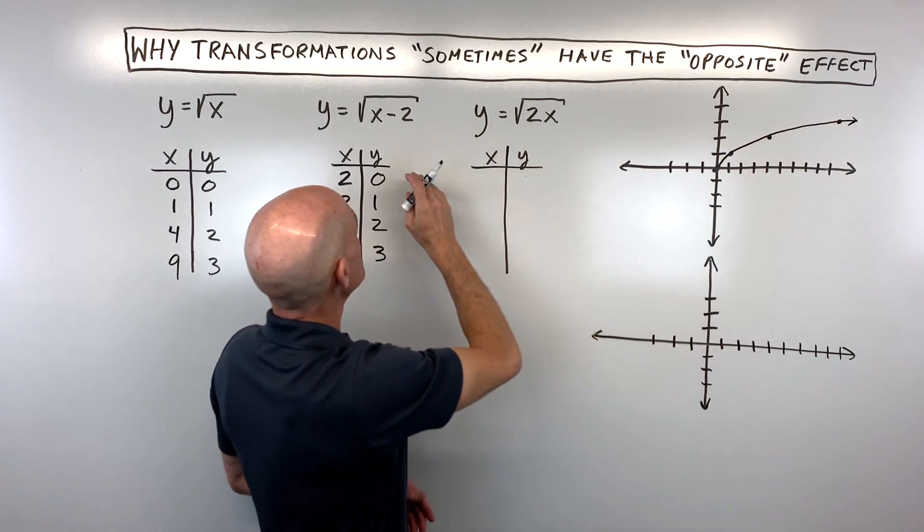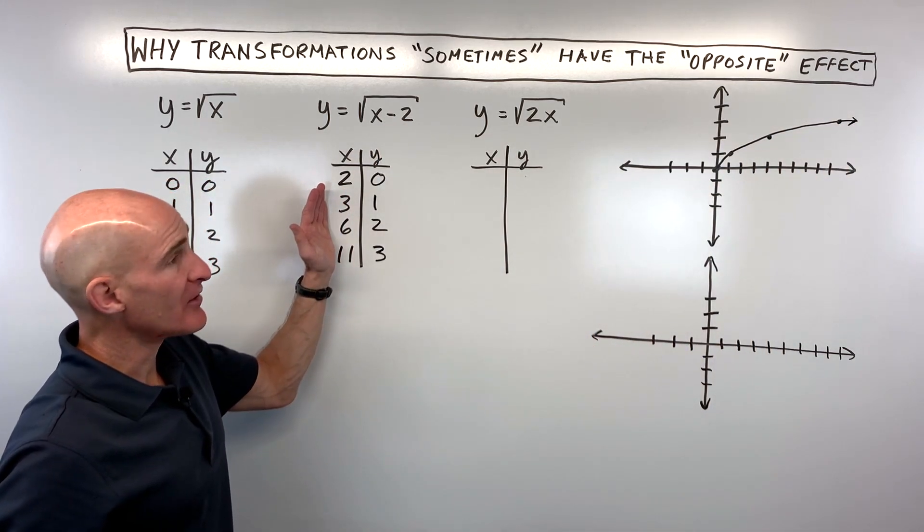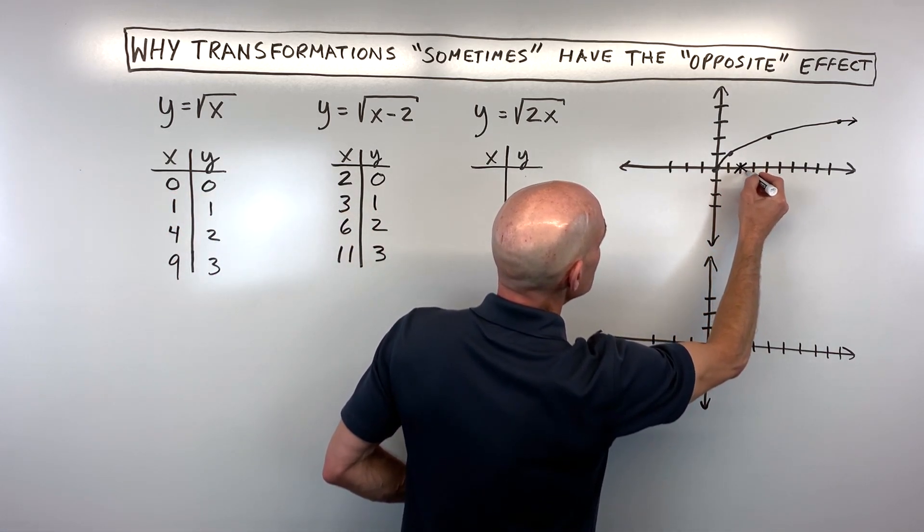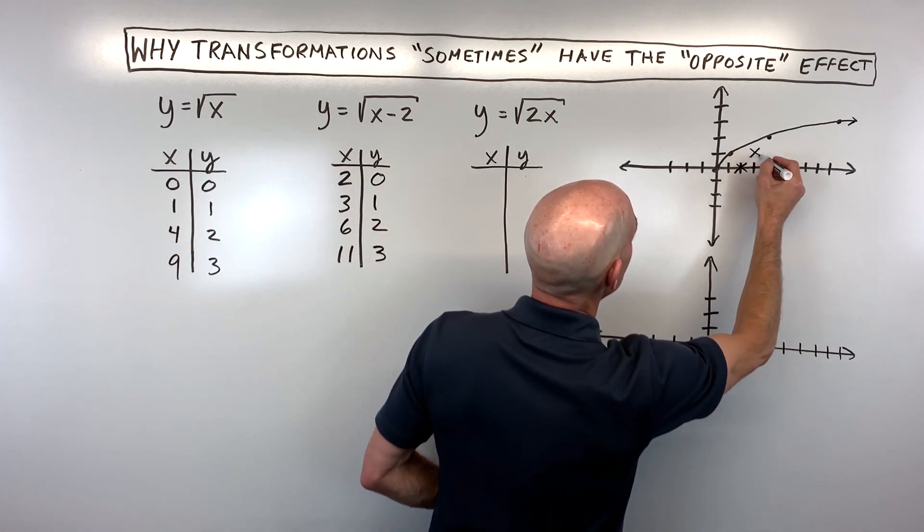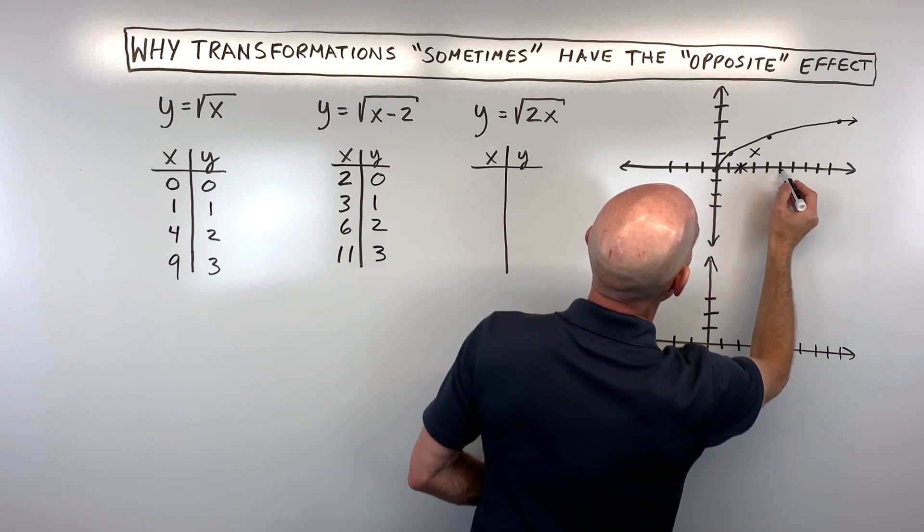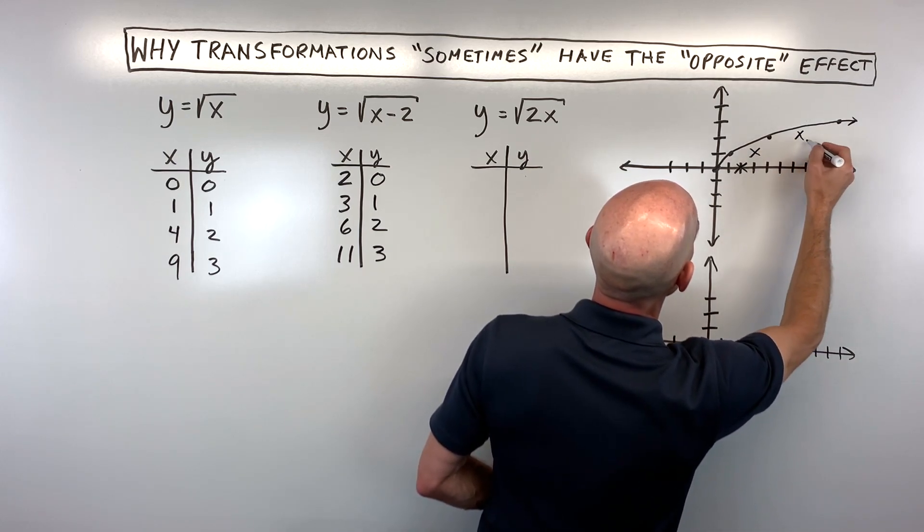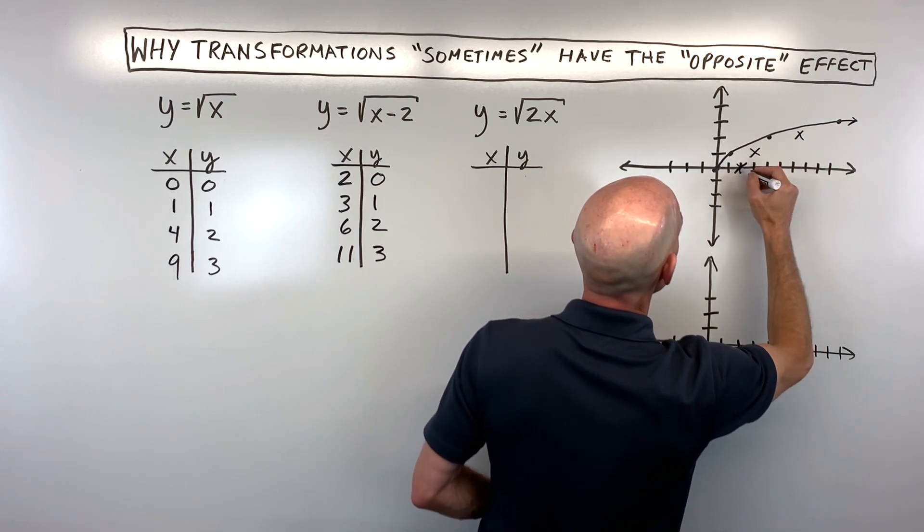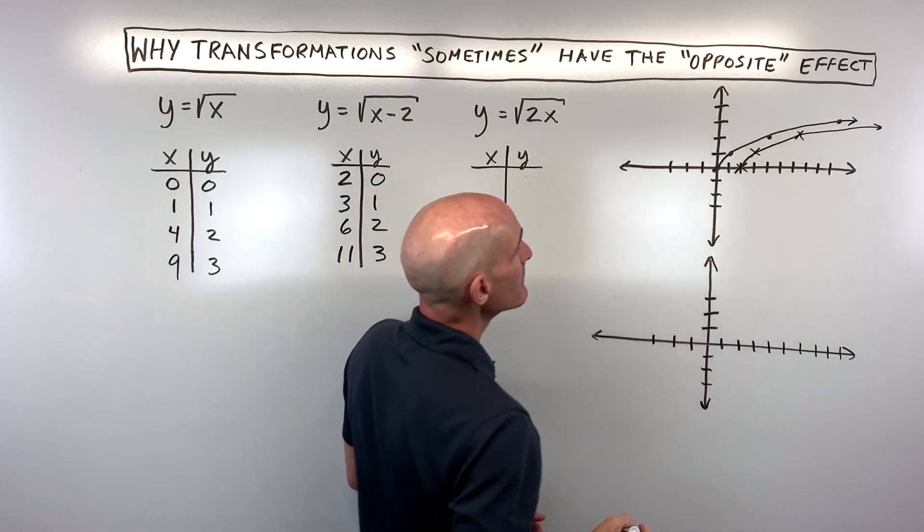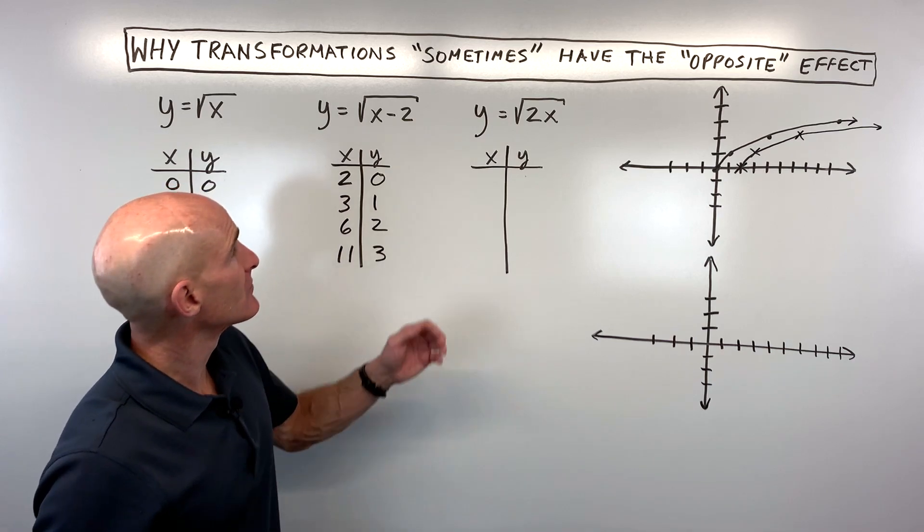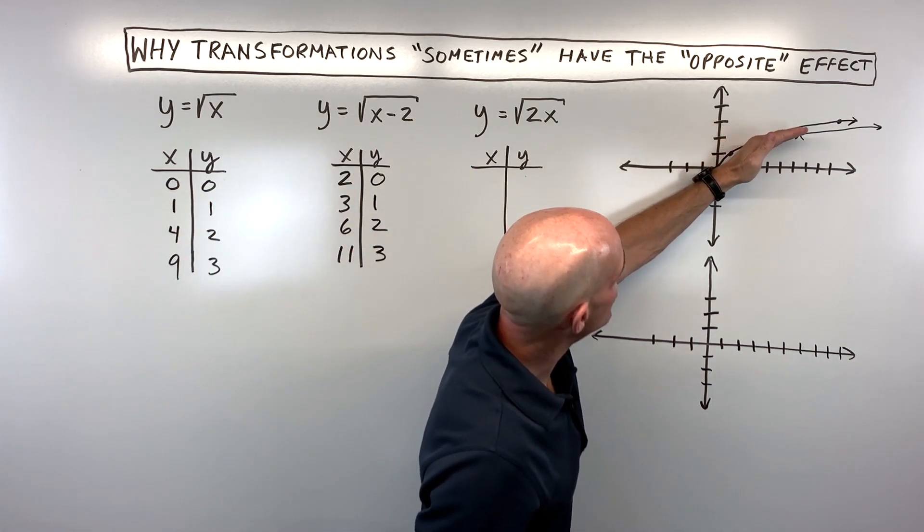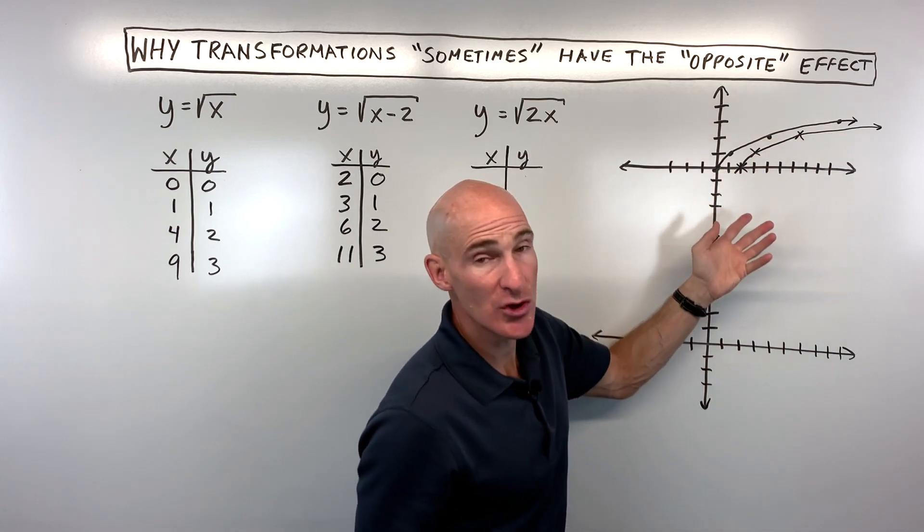But let's look at what happens with this x - 2 when we plot these points. Here we have (2, 0), (3, 1), (6, 2), and (11, 3). Basically, what you can see is this graph looks something like that. So what's actually happened here? You can see that this original graph has shifted to the right 2 units.